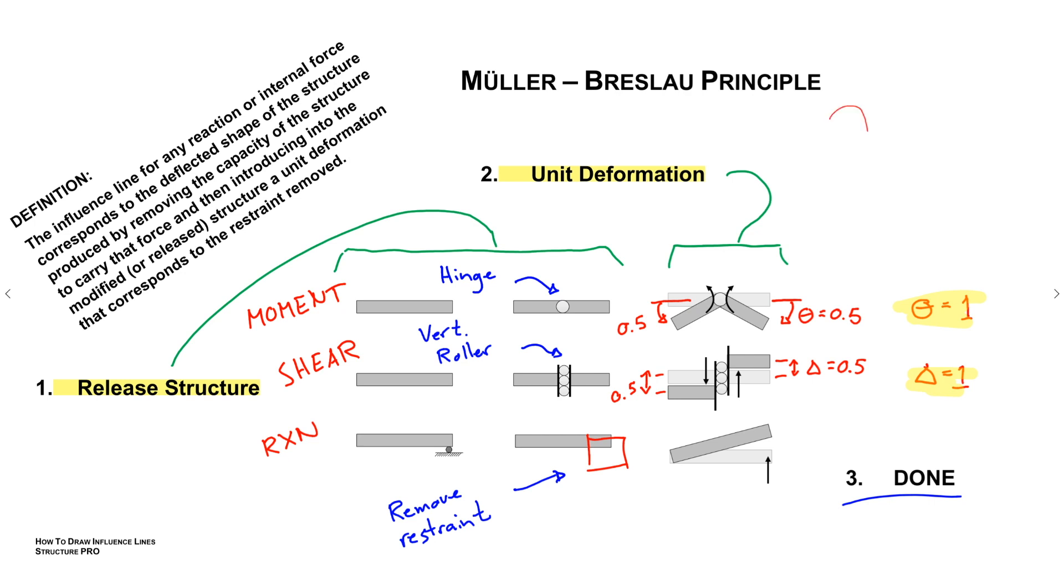Alright, that was easy enough. So we're actually done. It's actually just two steps. That third step was just recognizing that we were done. Alright, crazy. So let's just put this into practice. Okay, let's go back to that bridge example and let's create an influence line for it.